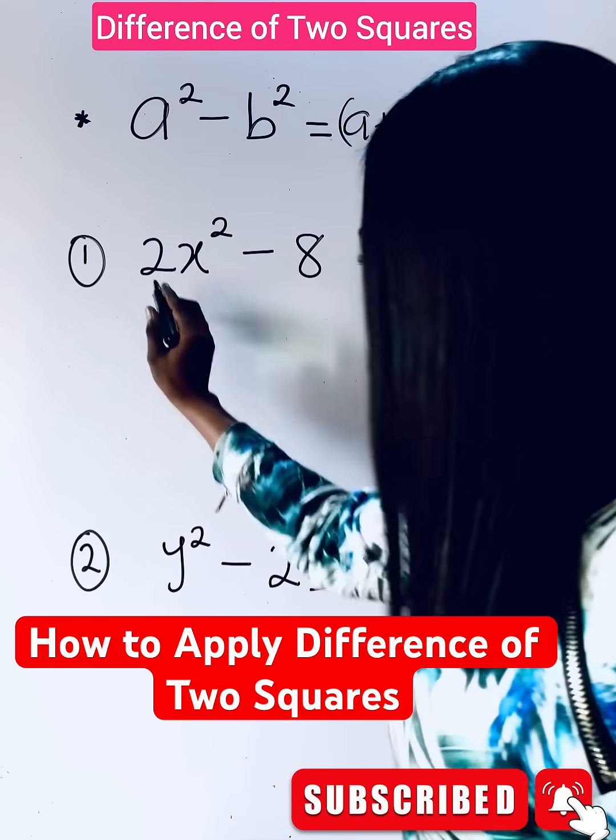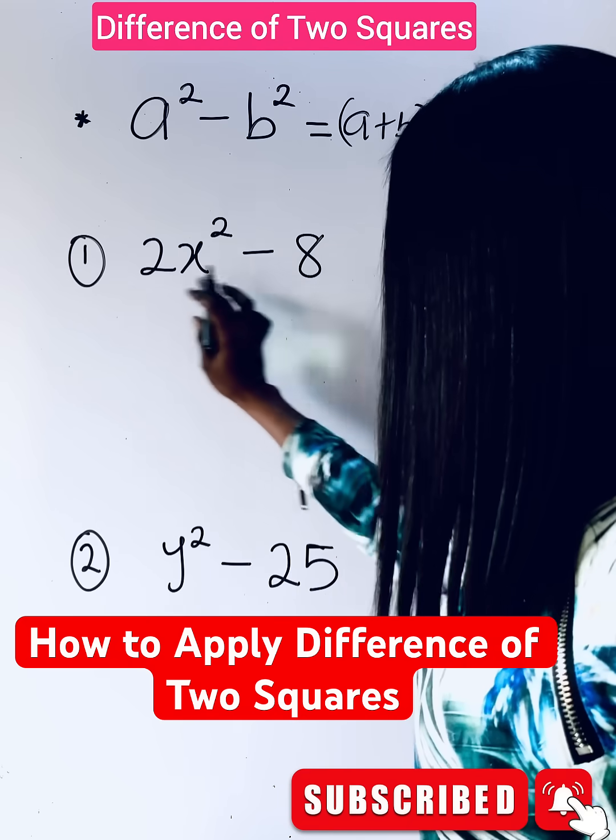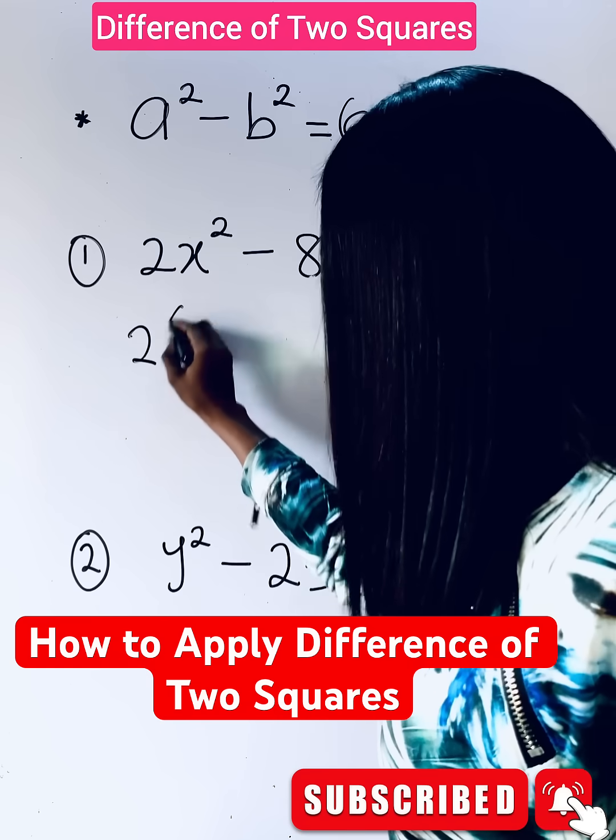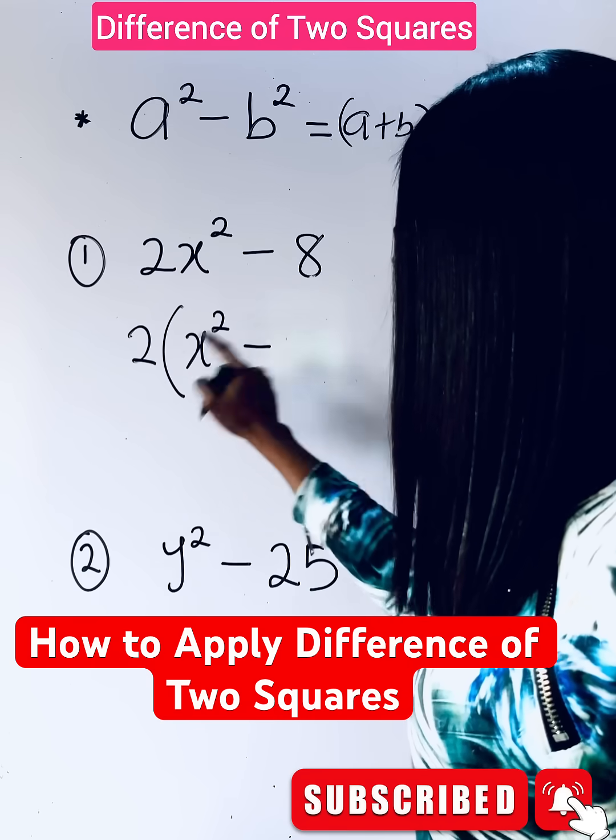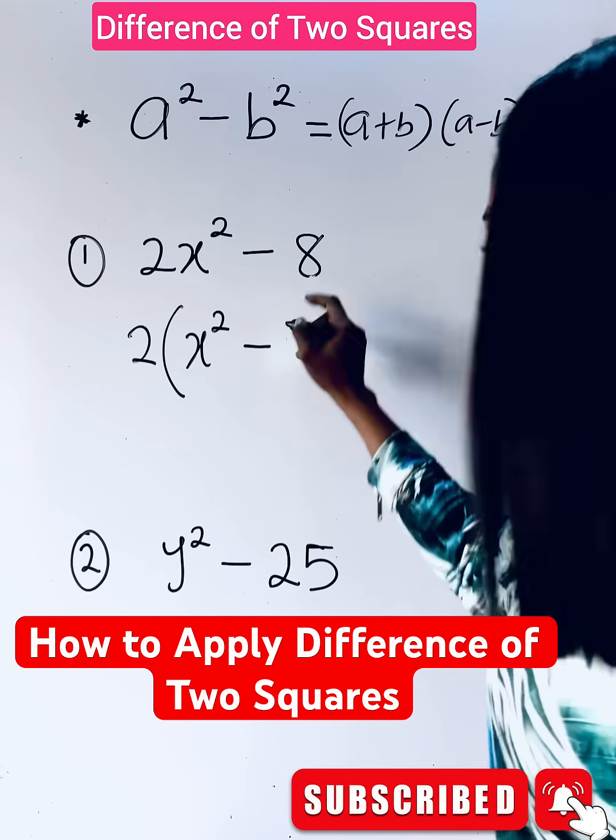Now, let me tell you what to do. You will notice that two can divide these two terms. So bring the two out. Use it to divide this. You have x squared minus. Use two to divide this. You have four.